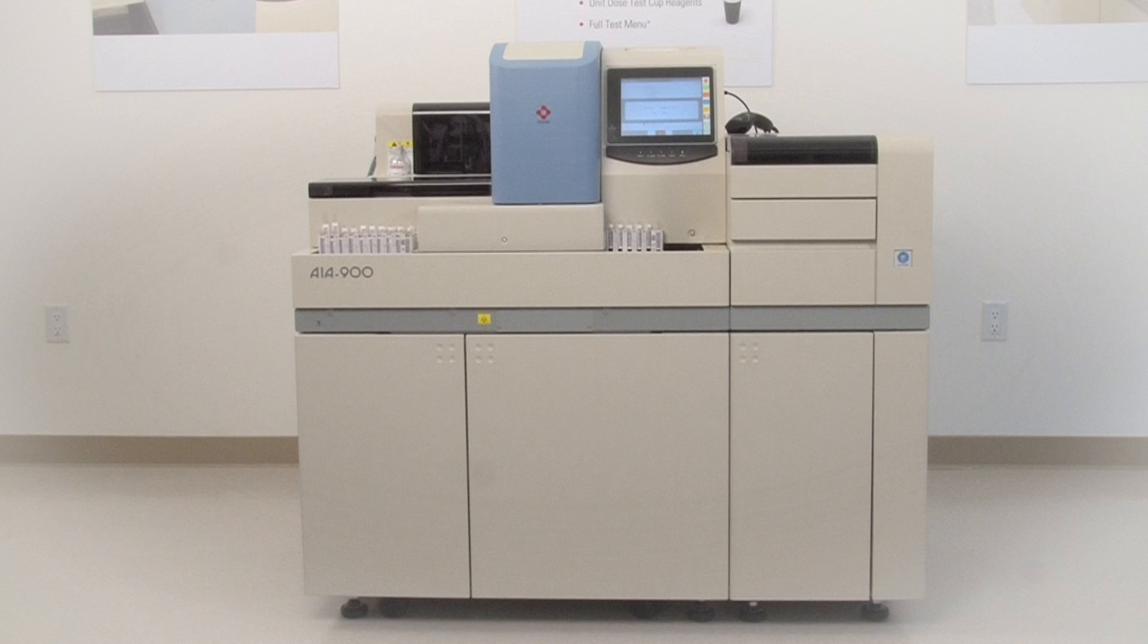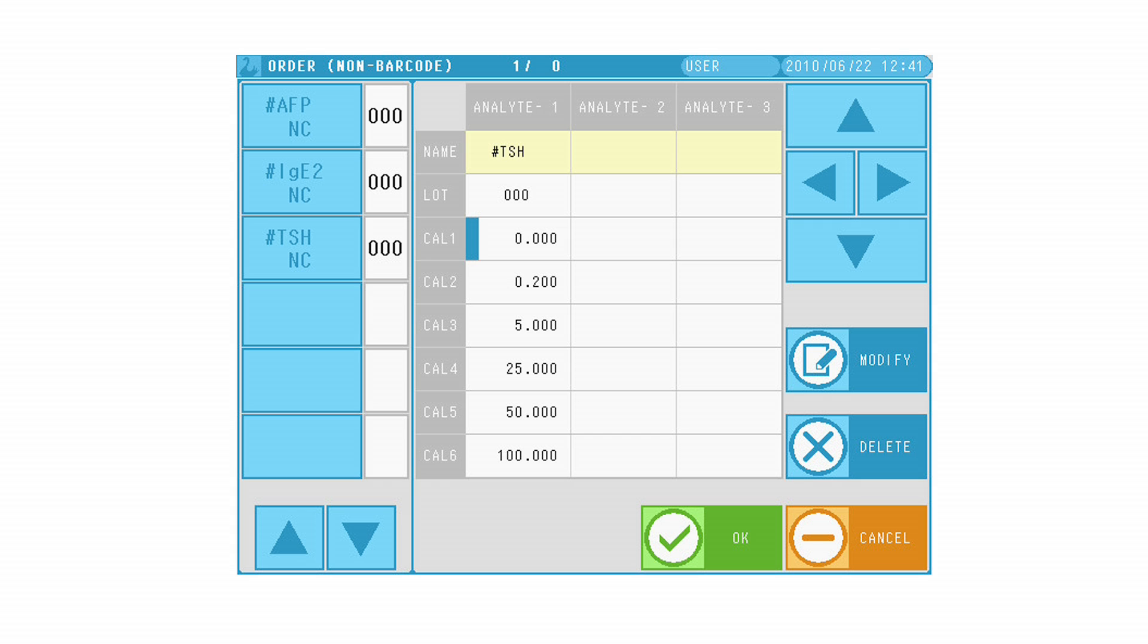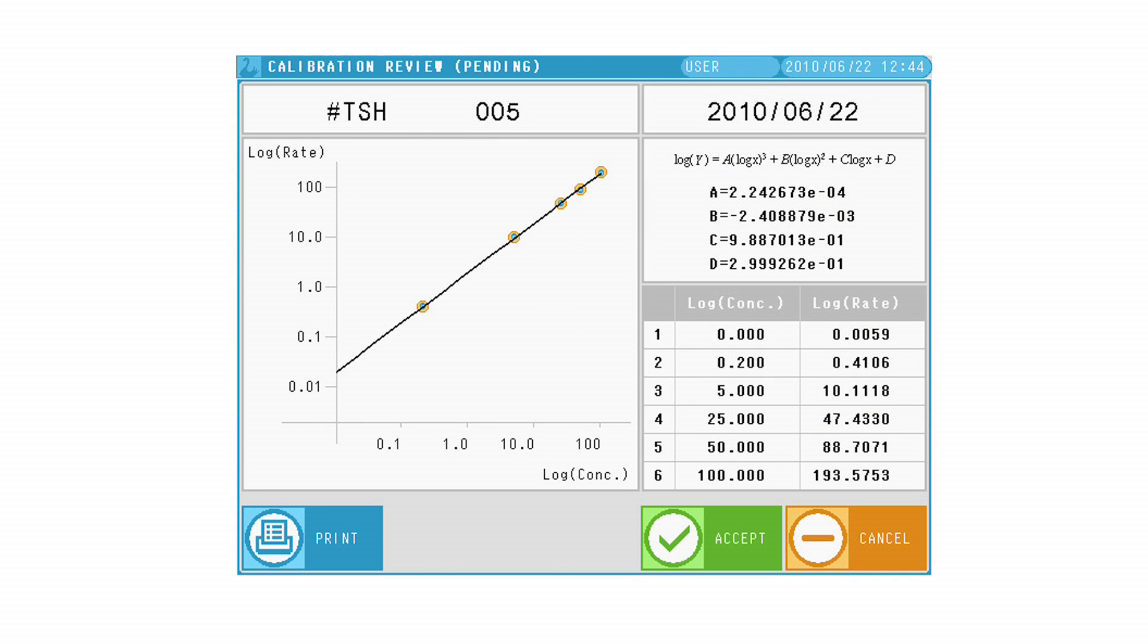Previously assayed test results can be calculated after calibration if the operator chooses to do so. The AIA 900 stores up to two calibration curves per analyte and calibrations are stable for 90 days on most assays.